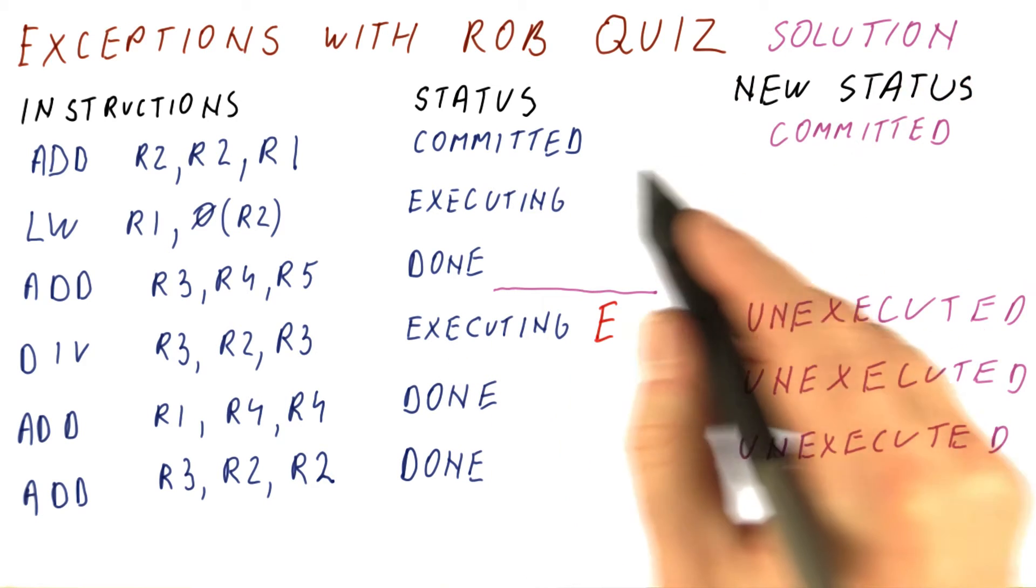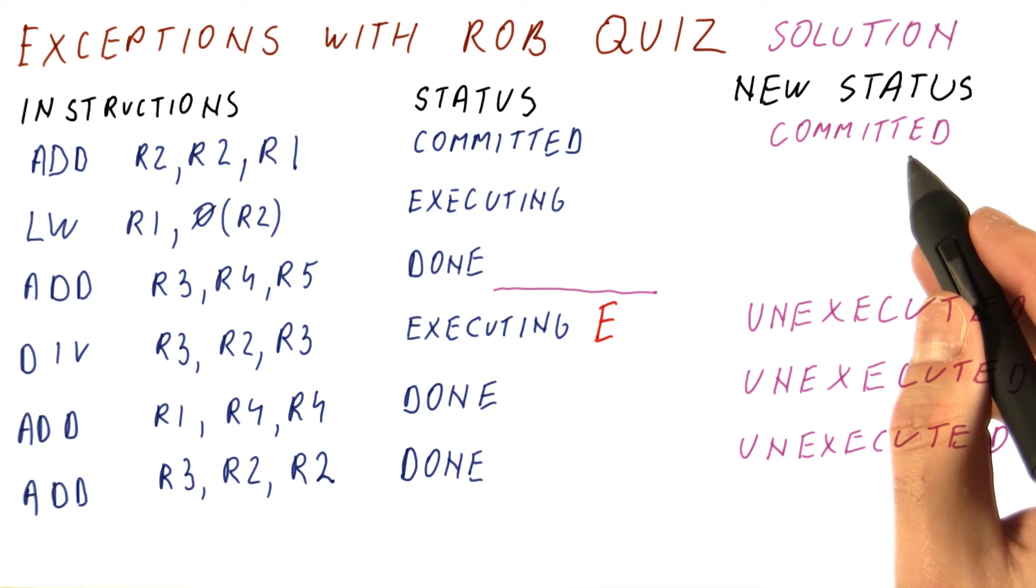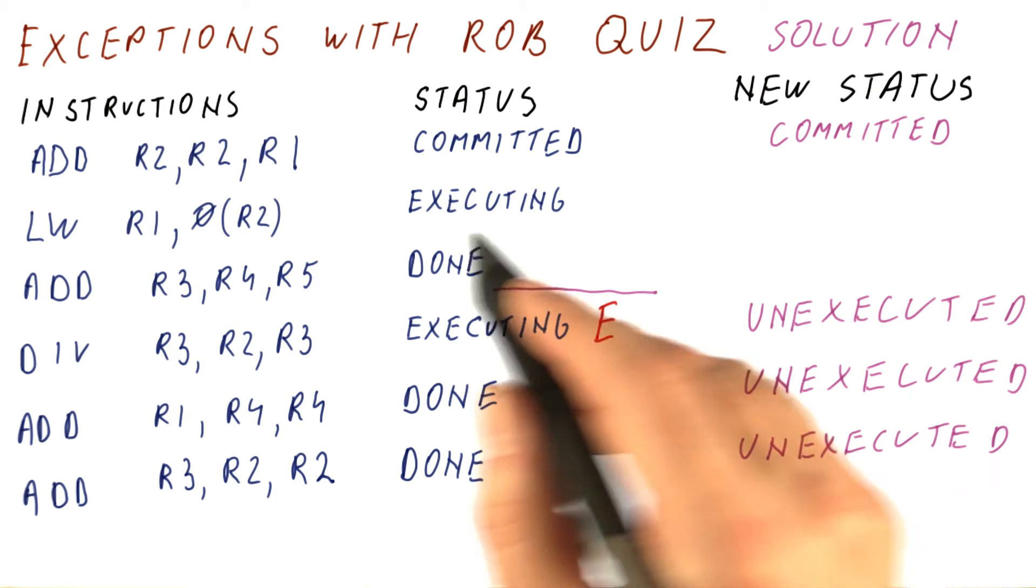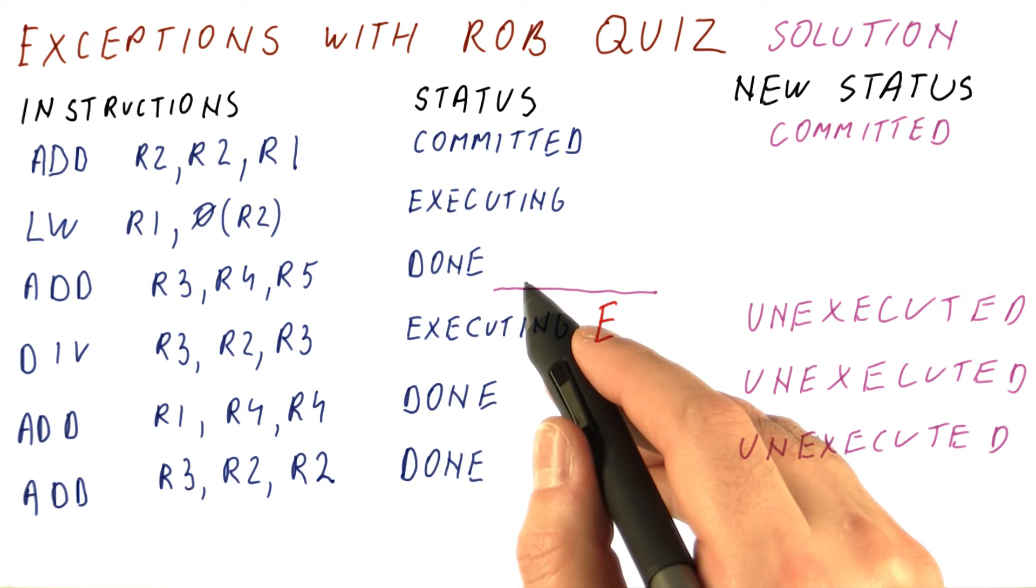Well, we have already committed this instruction before. It has to stay committed. We cannot uncommit instructions. This instruction has been executed and this one has been done.